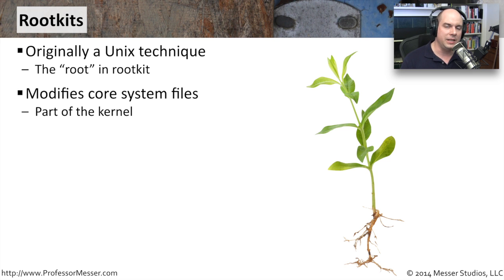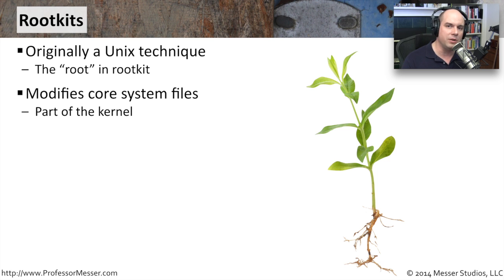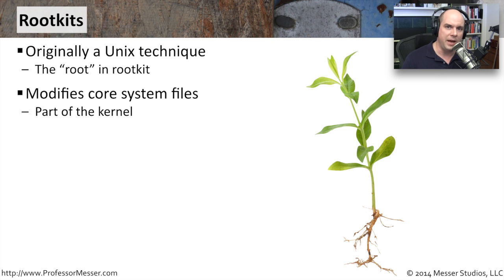A rootkit is something that is trying to hide itself, and a good way to hide itself in a computer is to become part of the operating system itself. If you can become part of the kernel or embed yourself deeply in the inner workings of an operating system, then you have a lot of power and can circumvent normal security on a system. That's not very easy to do, but if you are able to accomplish it, you've got a lot of power on that computer.